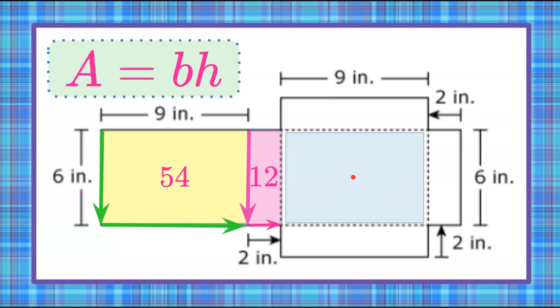Our third face is also a rectangle. We have a base of 9, I see that right here, and a height of 6. 9 times 6 is 54.